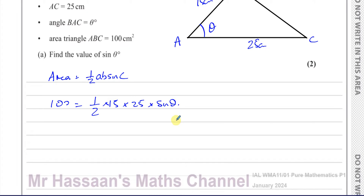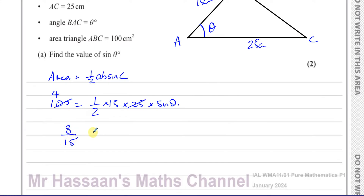We only want to find the value of sine of theta — we don't want to find theta itself. If we divide 100 by 25 we get 4, so we're left with 2 × 4 = 8, giving us 8 over 15. So sine(θ) = 8/15.